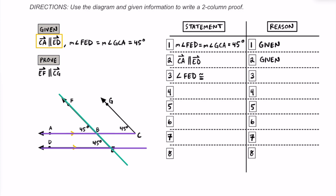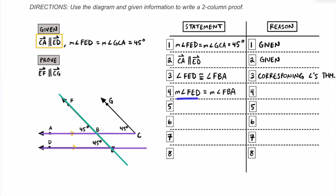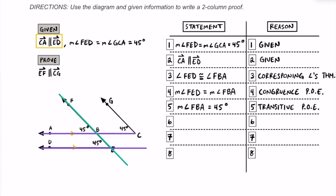The statement we're going to write: angle FED, which is this angle right over here, is going to be congruent to angle FBA, which is this angle right over here. We can say this by the corresponding angles theorem. Now, if we know that these two angles are congruent to each other, we can say that the measures of their angles are equal to each other by the congruence property of equality. So the reason why we can say that angle FBA is equal to 45 degrees is because the measure of angle FED is 45 degrees. Using substitution, we can say that the measure of angle FBA is equal to 45 degrees by the transitive property of equality or the substitution property of equality.